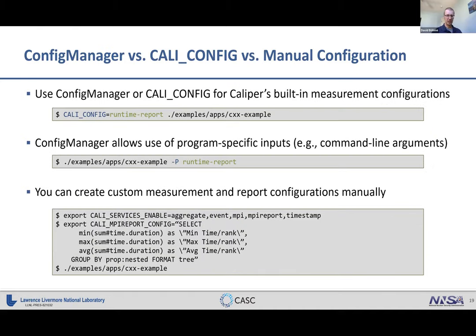There are several ways to configure Caliper: the CALI_CONFIG environment variable; the config manager API to enable built-in profiling configurations through program-specific inputs like command line flags; and entirely custom measurement and report configurations if none of the built-in ones do what you want, by selecting Caliper configuration variables directly.